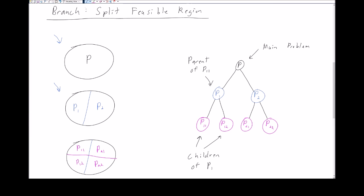After we branch once we can continue to branch and split our feasible region again. In this case we split our feasible region along a fuchsia line to generate regions P11 through P22. Note that each one of these regions P11 and P12 are a sub-region of P1.